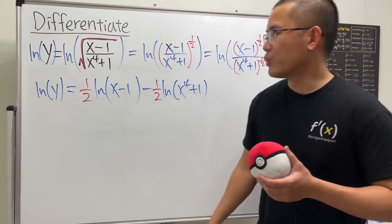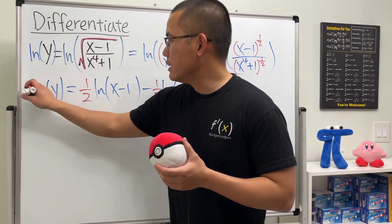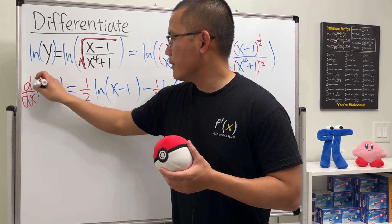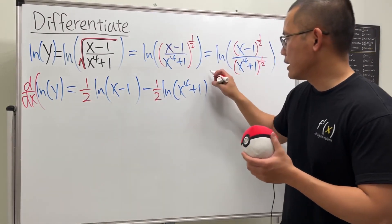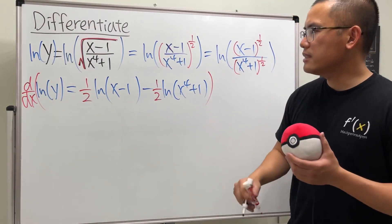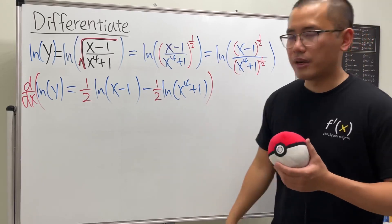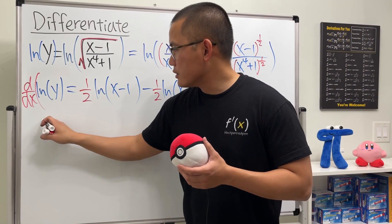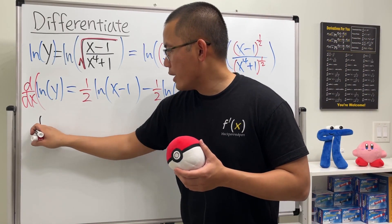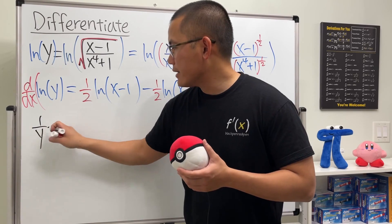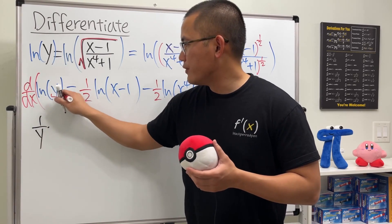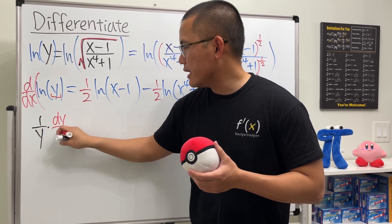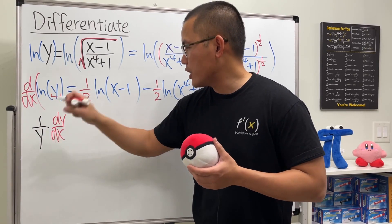Then we can take the derivative using implicit differentiation. Let's put on the d/dx and get started. On the left side we have ln y, so that gives us 1 over y times the derivative of y, which is dy/dx, thanks to the chain rule.